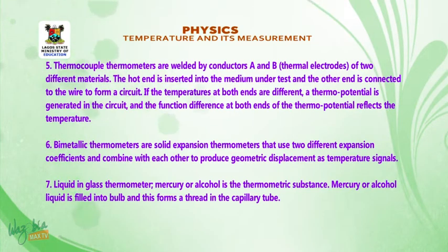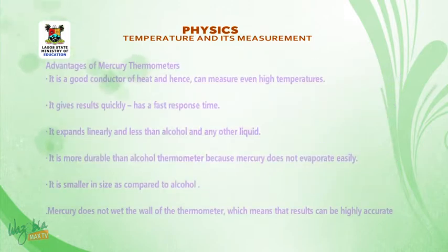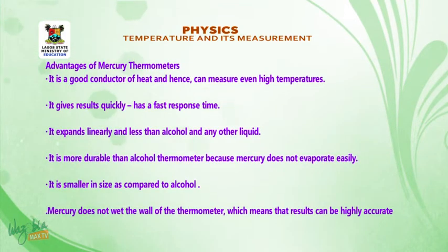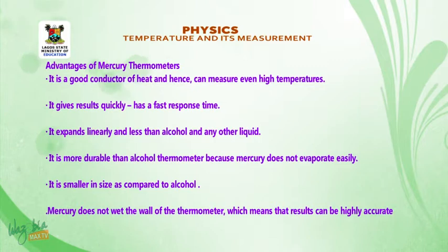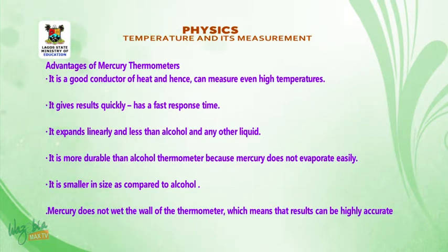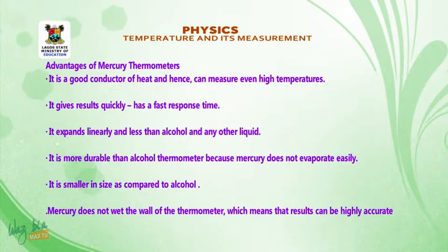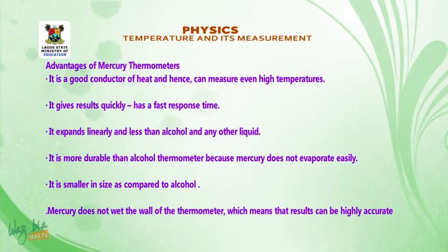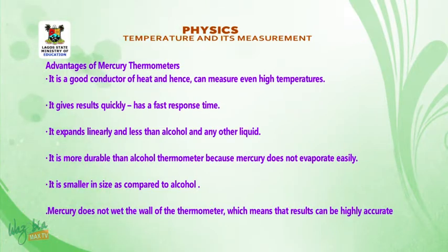Mercury or alcohol liquid is filled into a bulb, and the bulb is attached to a mercury tube. Advantages of mercury thermometer: it is a good conductor of heat and can measure even high temperatures. It gives results quickly with a fast response time. It expands linearly. It is more durable than alcohol and does not evaporate easily. It is smaller in size compared to alcohol.